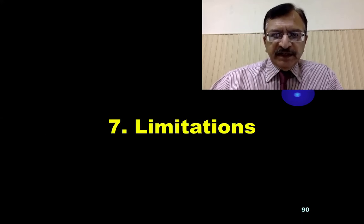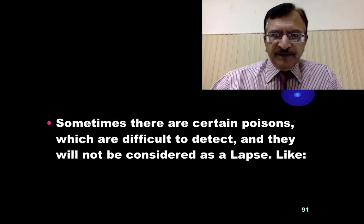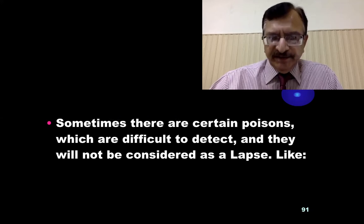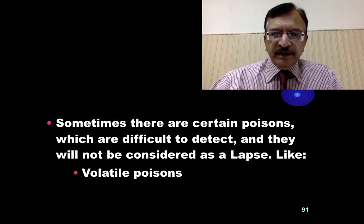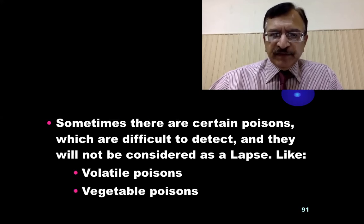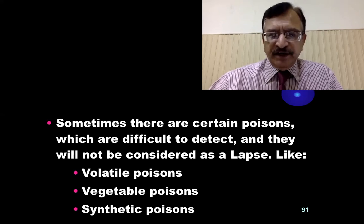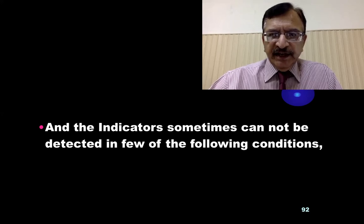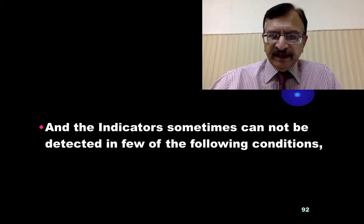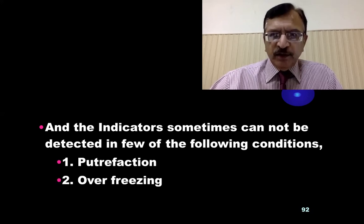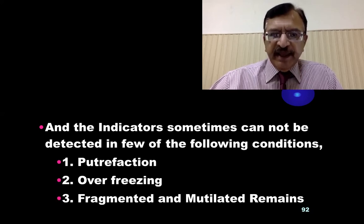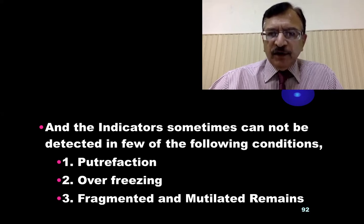There are certain limitations. Sometimes there are certain poisons which are difficult to detect and will not be considered as lapses. These include volatile poisons, vegetable poisons, and synthetic poisons. This is a limitation. Additionally, indicators sometimes cannot be detected in certain conditions like putrefaction, over-freezing, and fragmented or mutilated remains.